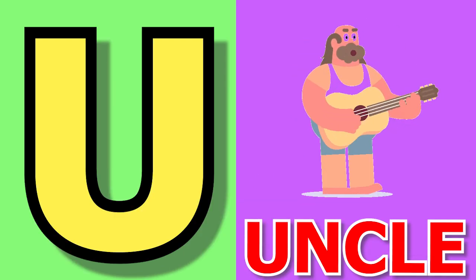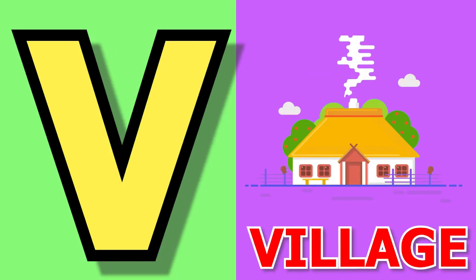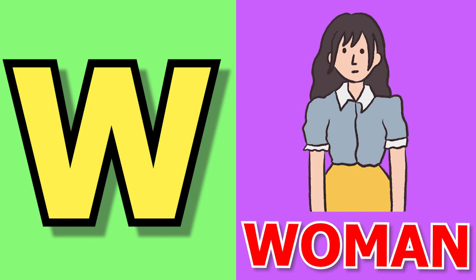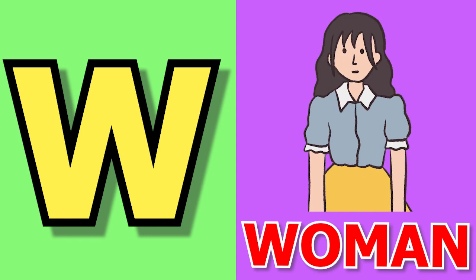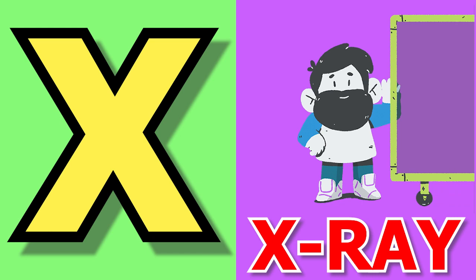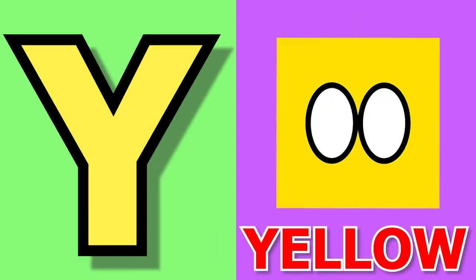U for uncle, uncle means cha-cha. V for village, village means gown. W for woman, woman means aurat. X for x-ray, x-ray means x-ray.